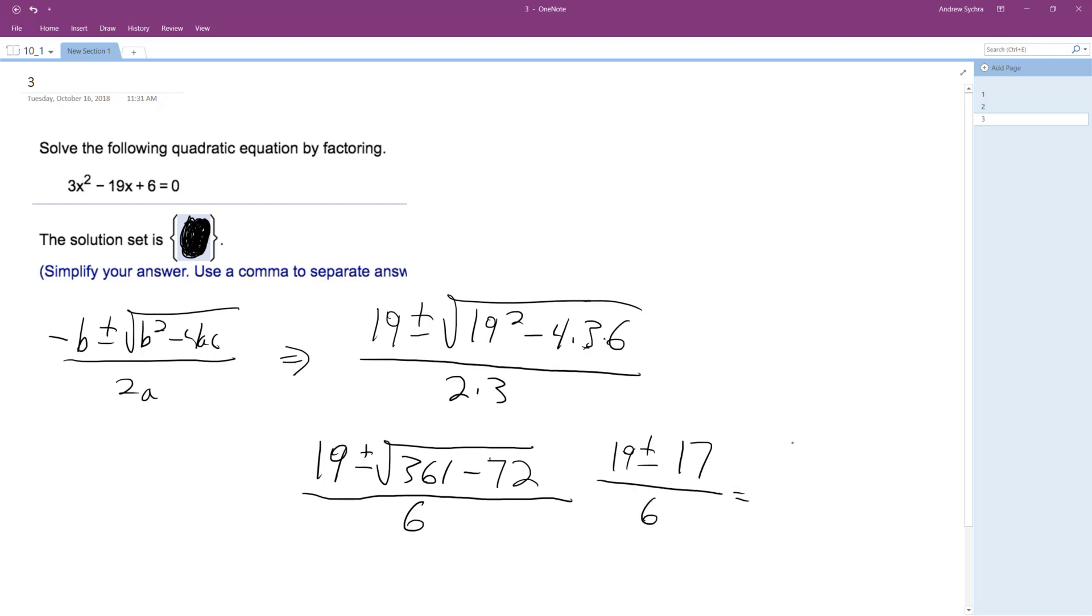And we get, so 2 over 6. And we get plus 17. So we get 1/3 and 6.